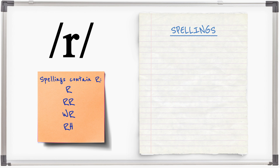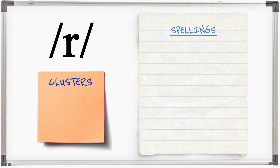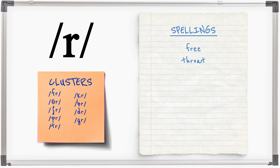R appears in some clusters: free, throat, shred, prison, tree, cry, breast, draw, grow.